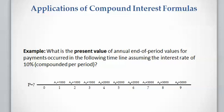Let's work on a slightly more complicated example. We want to calculate the present value of this cash flow, which are going to be annual end-of-period values for payments occurring in the following timeline, considering an interest rate of 10 percent compounded per period.